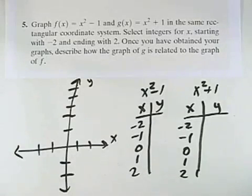Graph f of x equals x squared minus 1 and g of x equals x squared plus 1 in the same rectangular coordinate system, selecting integers for x, starting with negative 2 and ending with 2. Once we've obtained the graphs, describe how the graph of g is related to the graph of f.